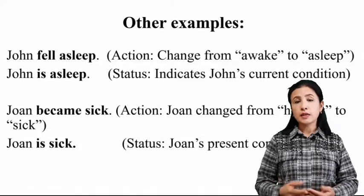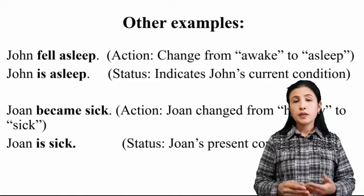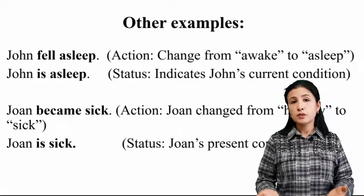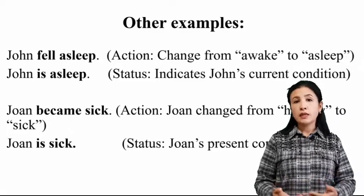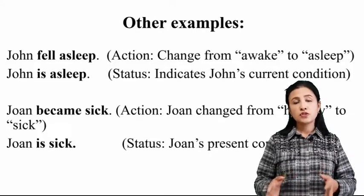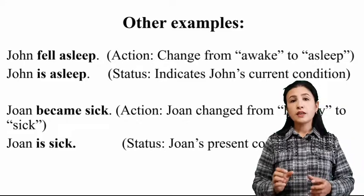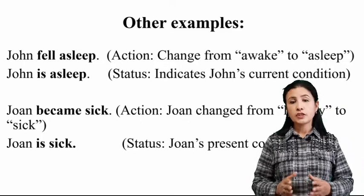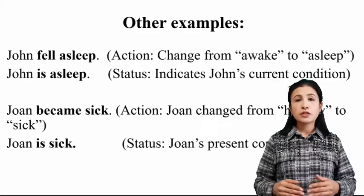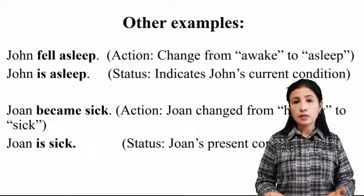Here are more examples. 'Jack fell asleep' — and the next sentence — 'Jack is asleep.' What's the difference? 'Jack fell asleep' is an action because Jack changed from awake to asleep. 'Jack is asleep' describes his current condition — his current condition is asleep.